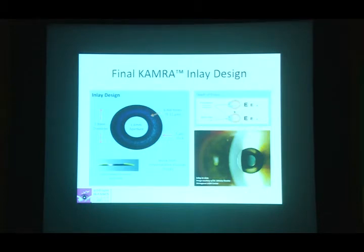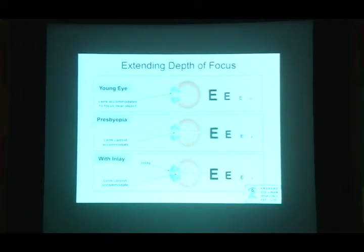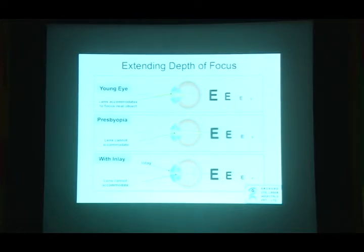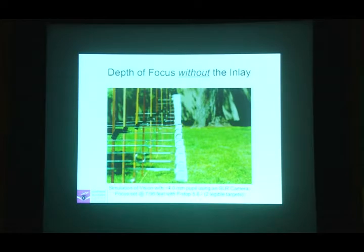This was simulated by Dr. Jack Holladay in his backyard. Using an SLR camera set at 4 mm pupil, f-stop 5.6, focus at 7.96 feet, you see only 3 of 15 targets clearly. When the setting is changed to simulate a 1.6 mm pupil — f-stop 22 — the entire range of vision becomes clear. This explains why a 1.6 mm aperture was selected for the Kamra inlay.